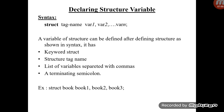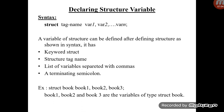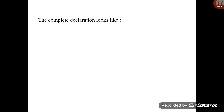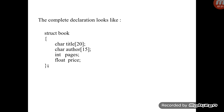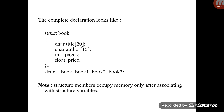For example: `struct book book1, book2, book3;` — here book1, book2, and book3 are variables of type struct book. Each of them will have their own copies of title, author, pages, and price. So book1 has its own title, author, pages, and price; book2 has its own set; and book3 similarly. Structure members occupy memory only after they are associated with a structure variable.